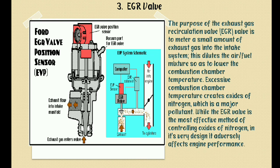Next is the EGR system — Exhaust Gas Recirculation system. The purpose of the exhaust gas recirculation valve is to meter a small amount of exhaust gas into the intake system. This dilutes the air-fuel mixture so as to lower the combustion chamber temperature. Excessive combustion chamber temperature creates oxides of nitrogen, which is a major pollutant. The EGR valve is the most effective method of controlling oxides of nitrogen.